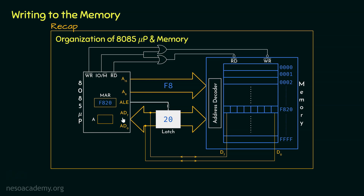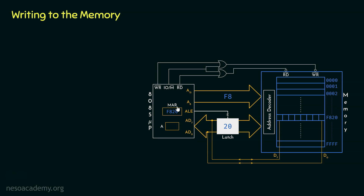We will have some data within the accumulator of the microprocessor and we will try to write the data to memory location F820. The memory address register is already holding the data F820. Furthermore, the higher order byte and the lower order byte of the address have already been sent via the address bus. At this point, ALE is active, indicating that this particular channel is working as the lower order address bus, not the data bus.